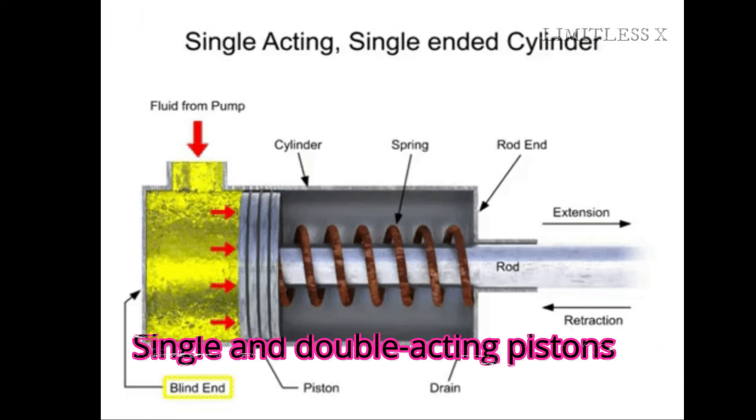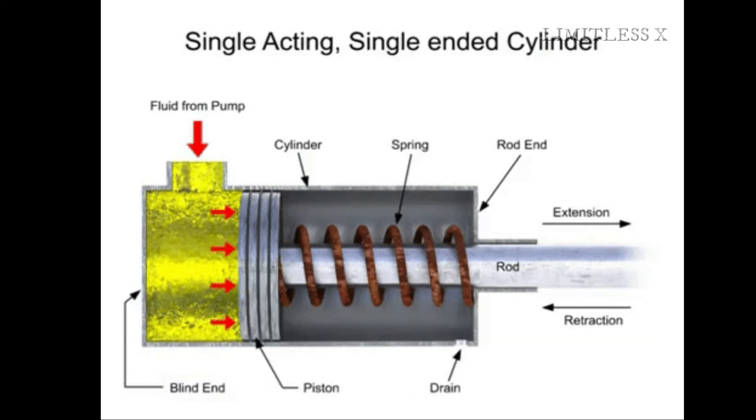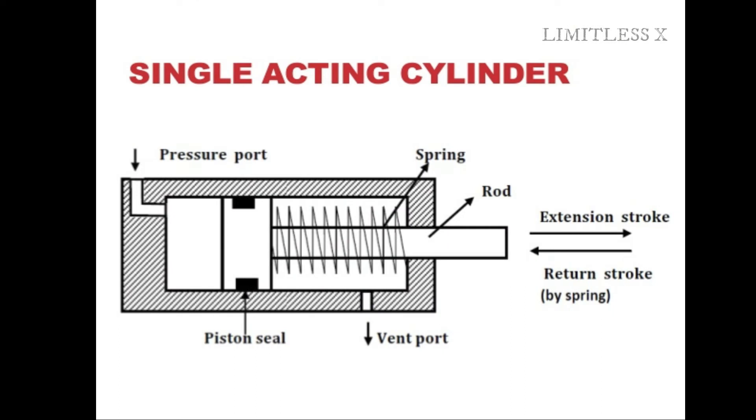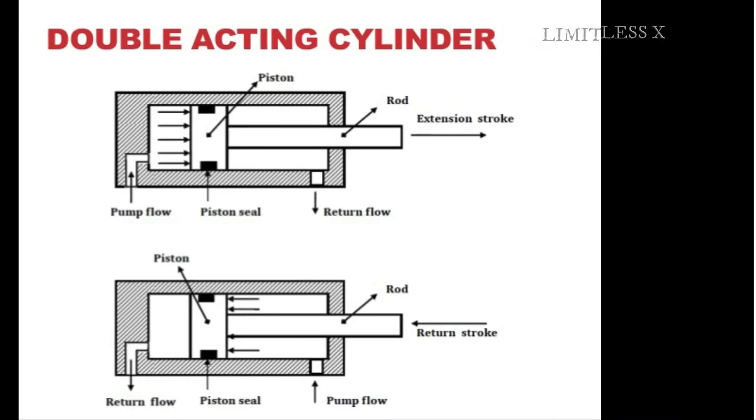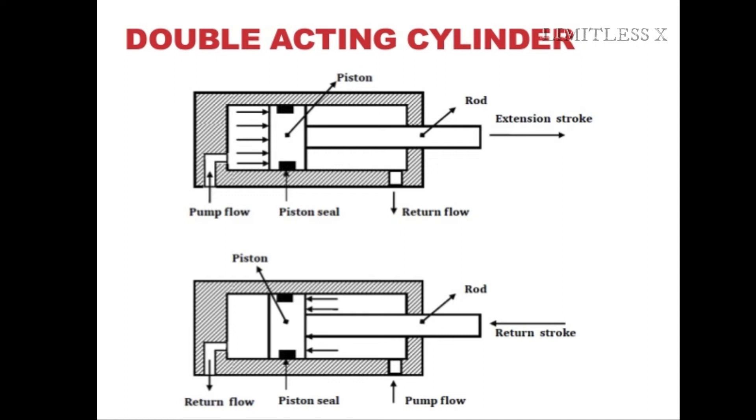Single and double acting pistons. A conventional piston pressurizes fluids only in its forward stroke. Such a piston is also known as a single acting piston. However, certain pistons pressurize fluids in both the forward and return strokes. This is made possible by using a fixed connecting rod and pressure-tight surfaces at both faces of the piston crown. Such pistons are known as double acting pistons.